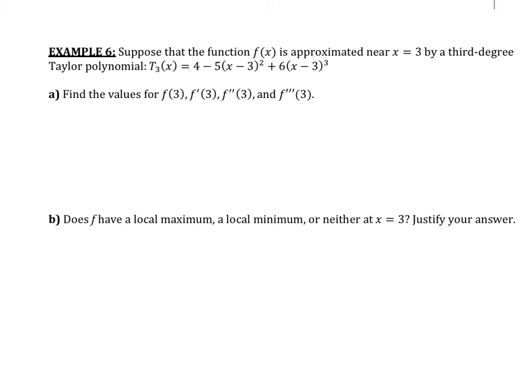Let's look at example number six. Suppose that the function f of x is approximated near x equals three. When it says near x equals three, this just means it's centered at x equals three by a third degree Taylor polynomial, and it gives the Taylor polynomial. It asks us to find the values for f of three, f prime of three, f double prime of three, and f triple prime of three.